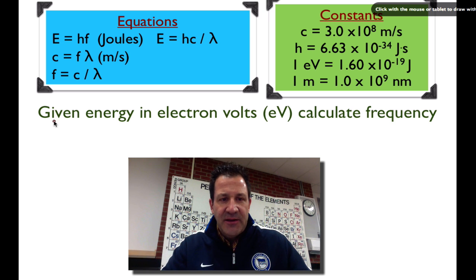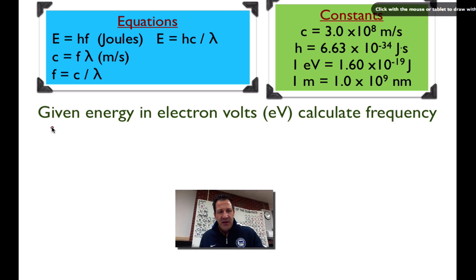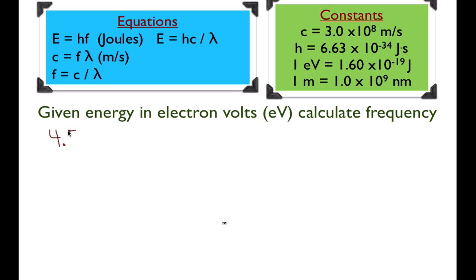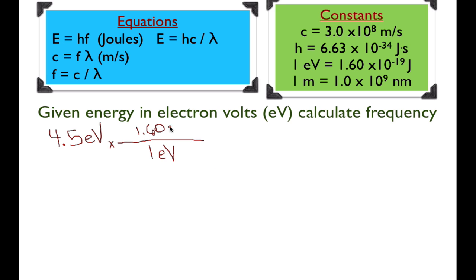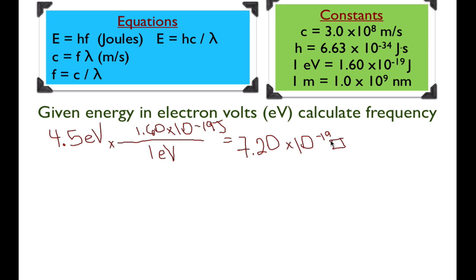I'm randomly picking an energy of 4.5 electron volts. We want to convert that to joules using the conversion factor: 1 electron volt = 1.6×10⁻¹⁹ joules. Putting 1 electron volt in the denominator of the conversion factor and 1.60×10⁻¹⁹ joules in the numerator gives us the energy in joules.